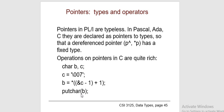The major advantages of pointers: pointers are used for dynamic memory allocation and deallocation; they help form complex data structures such as linked lists, graphs, and trees; they reduce the length of a program and execution time. Disadvantages: memory corruption can occur with incorrect use; pointers are complex to understand; pointers are responsible for memory leaks in C; they are comparatively slower than regular variables; and improper use can cause segmentation faults.